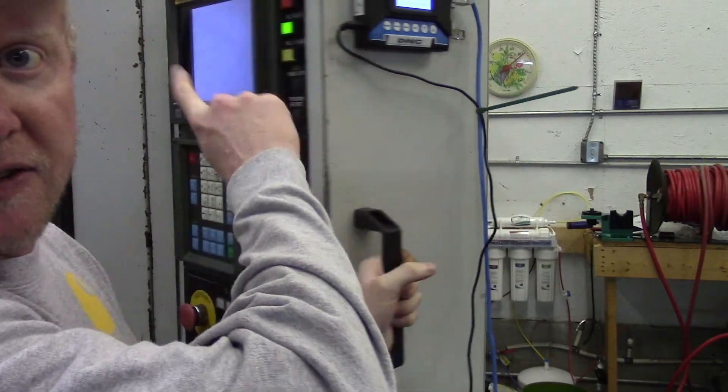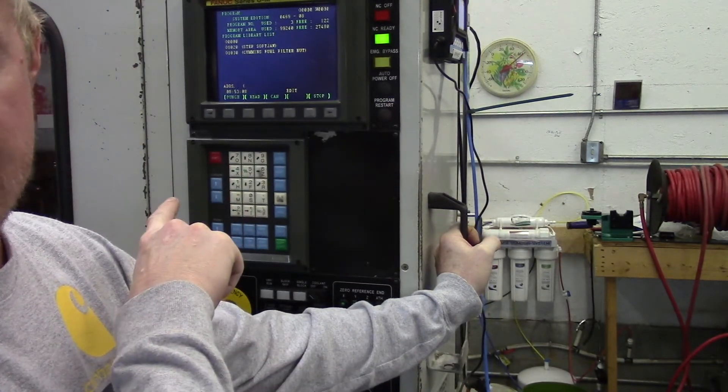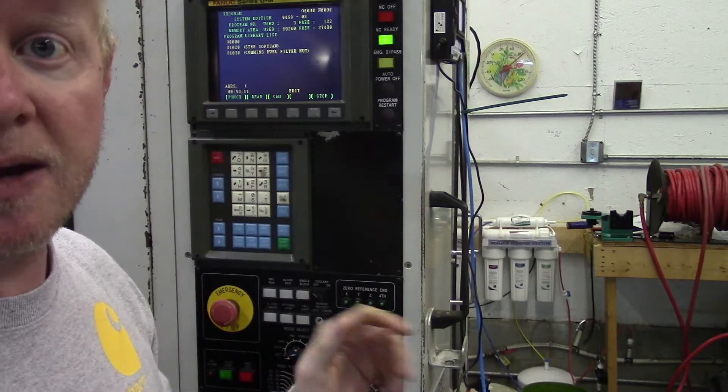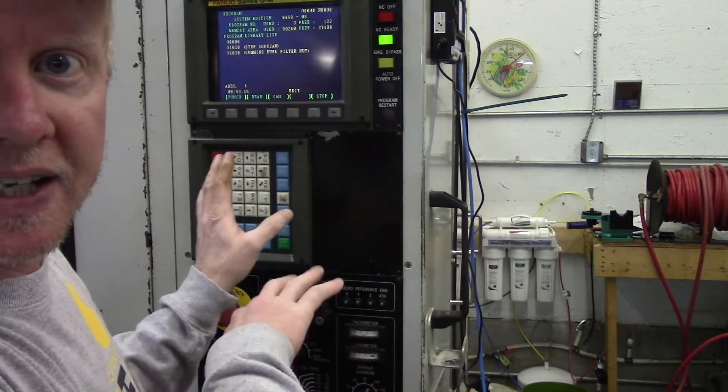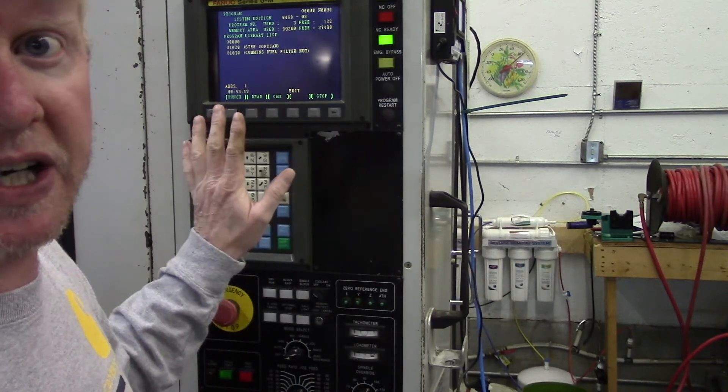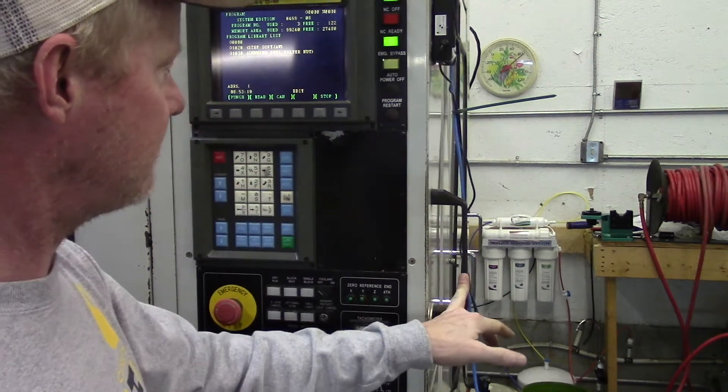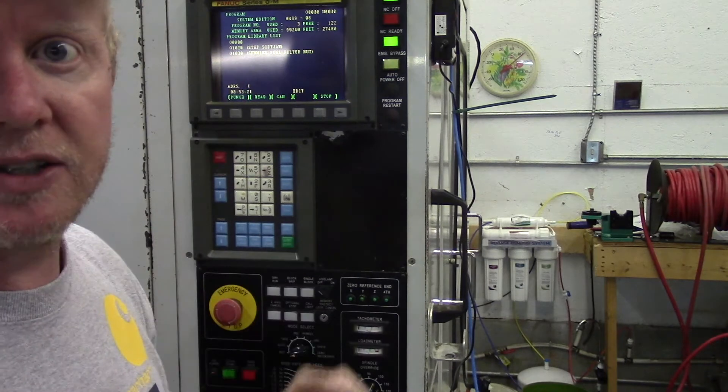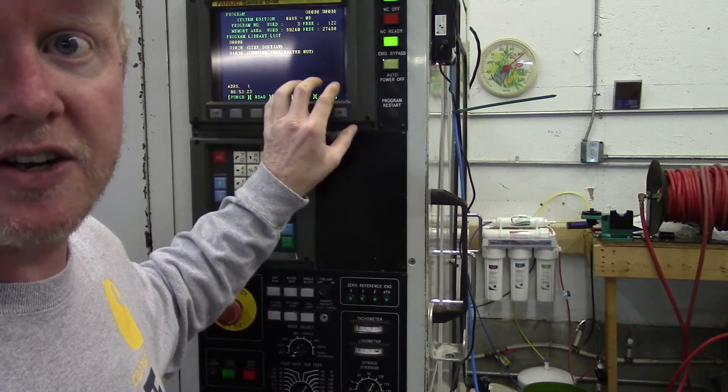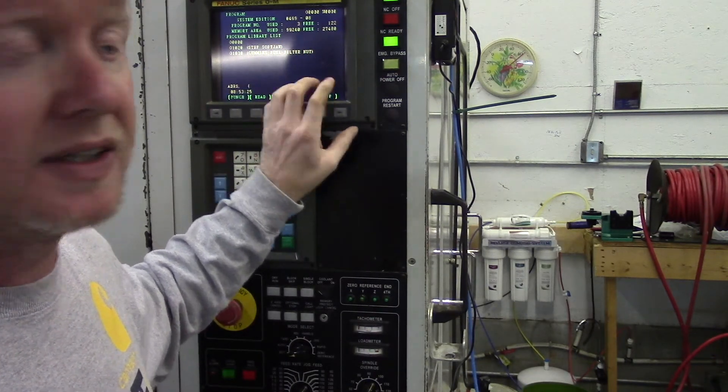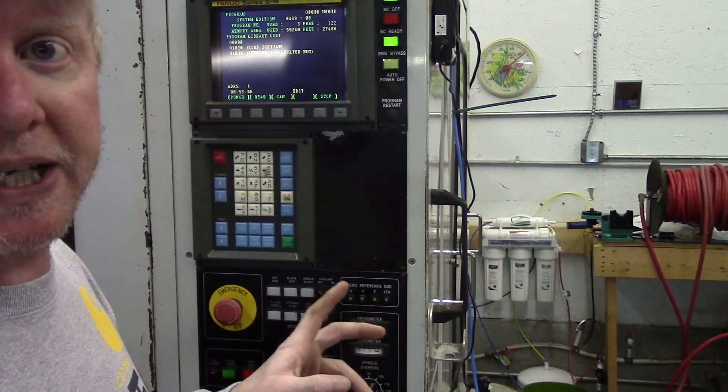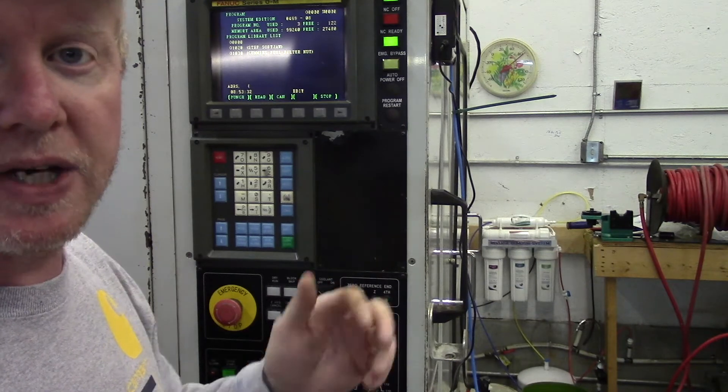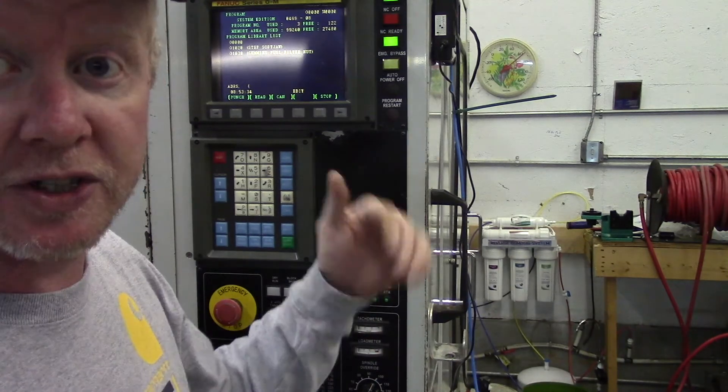Another thing I'll note is this does come set up at the default of the Fanuc. On my particular machine, I did boost that up - I am running 19,200. So if you know how to go in and edit options on the Fanuc controller, I'm not going to cover that in this video, it's pretty easy to do. You can go in and change your com port up to 19,200 and then change this to 19,200 and it works perfectly.